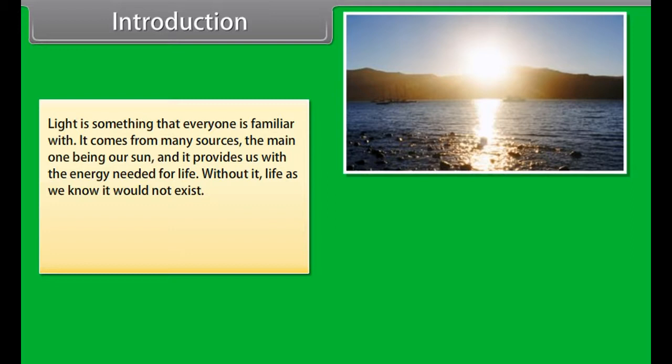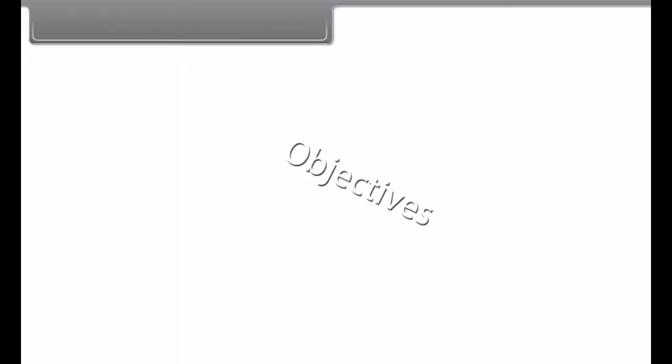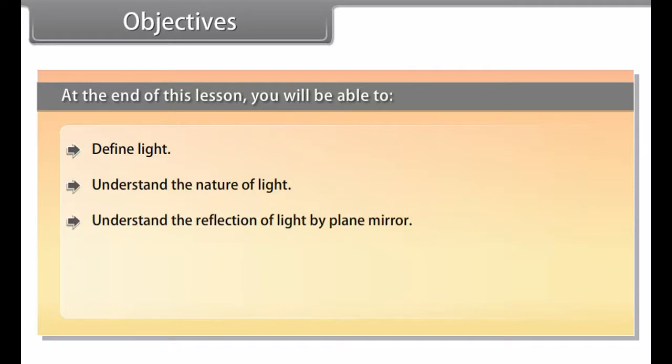The form of energy which helps us to see objects is called light. Objectives: At the end of this lesson, you'll be able to define light, understand the nature of light, understand the reflection of light by a plane mirror and laws of reflection.